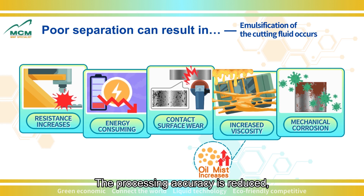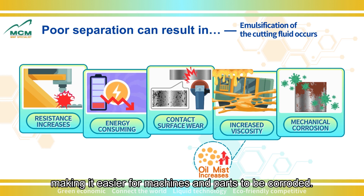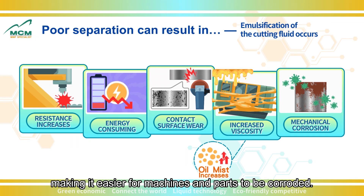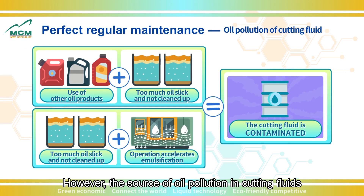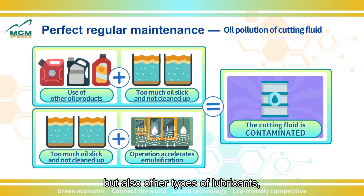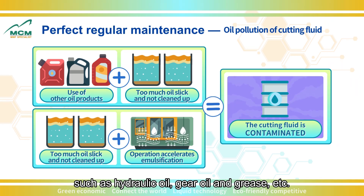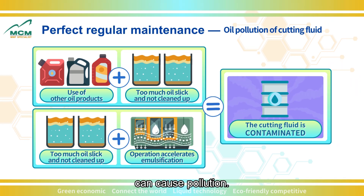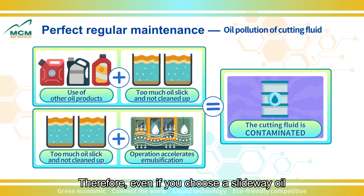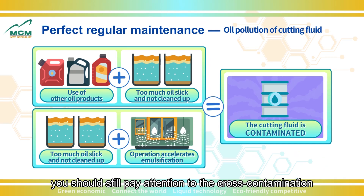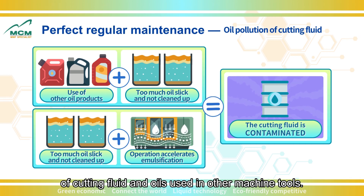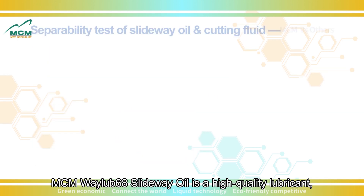The processing accuracy is reduced, making it easier for machines and parts to be corroded. However, the source of oil pollution in cutting fluids is not only slideway oil — other types of lubricants such as hydraulic oil, gear oil, and grease can also cause pollution. Therefore, even if you choose a slideway oil with excellent separation properties, you should still pay attention to the cross-contamination of cutting fluid and oils used in other machine tools.